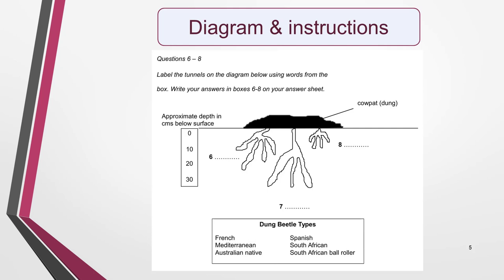We're now ready to look at a sample question. This set of instructions is taken from a past test paper. You'll notice that for this particular question, you're given a list of words with which to label the diagram. The information needed to label it correctly will be in the text, although it may be concealed in synonyms and paraphrasing.